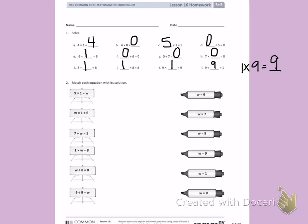Part 2, match each equation with its solution. N times 1 equals W. W equals 9. W times 1 equals 6. W equals 6. 7 divided by W equals 1. This is similar to letter L, so W equals 7. 1 times W equals 8. W equals 8.